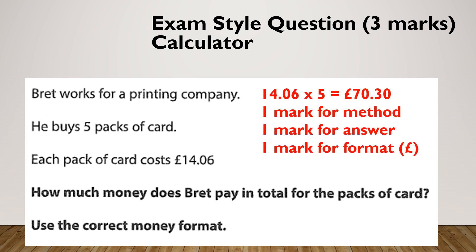Hopefully you got £70.30. Because he buys five packs and each pack costs £14.06, he is spending five lots of £14.06. So you get one mark for your method, one mark for your answer, and one mark for your format. Don't forget: format-wise you need your pound sign and your zero. If you've written 70.3, you're only getting two marks.